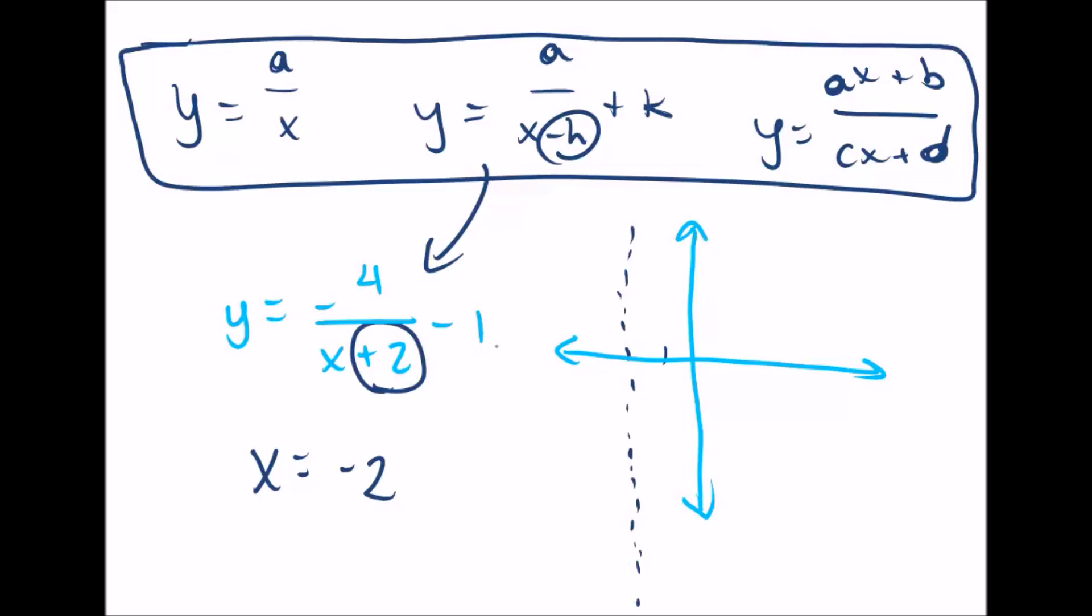The new y asymptote, the horizontal asymptote, will be at negative one. This one's not opposite. k has never been opposite. So a new one at negative one.